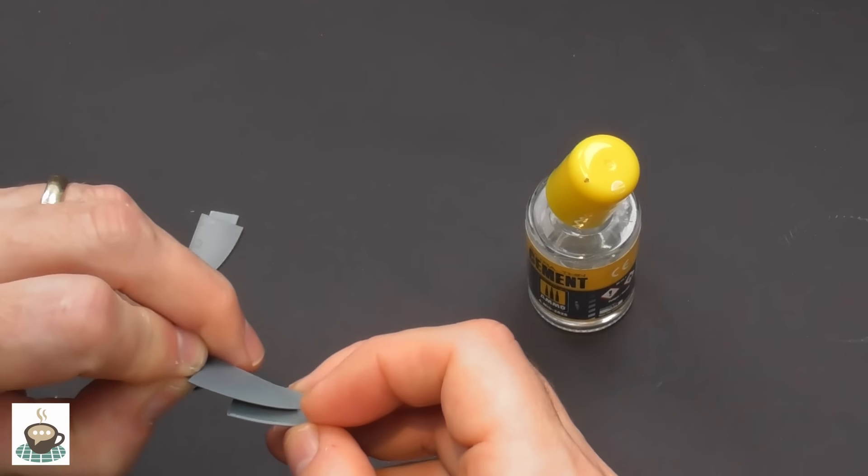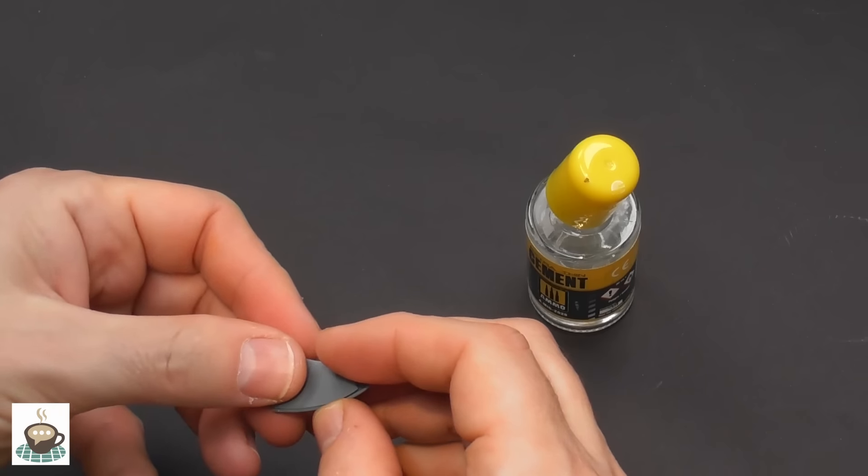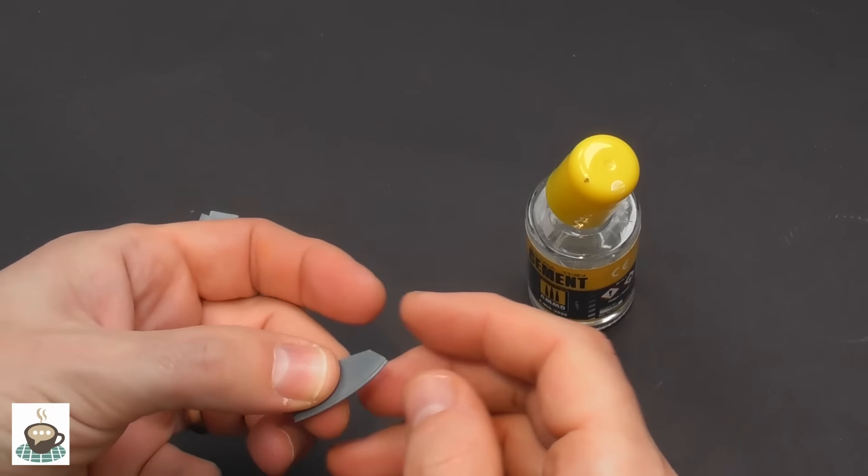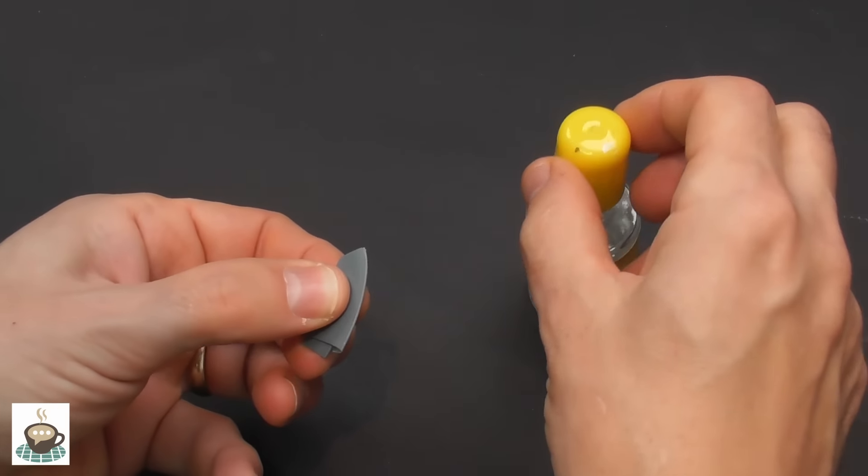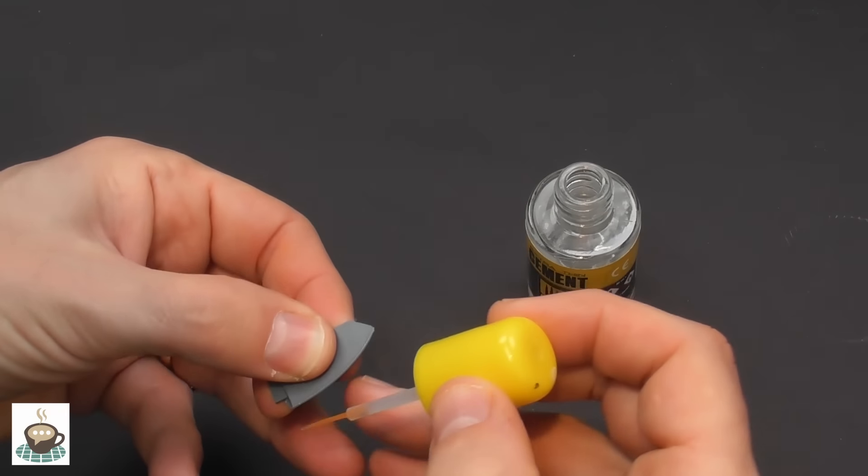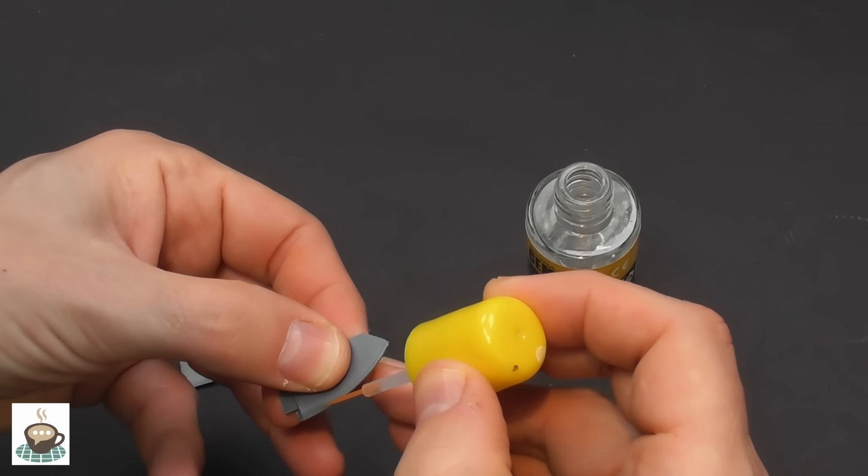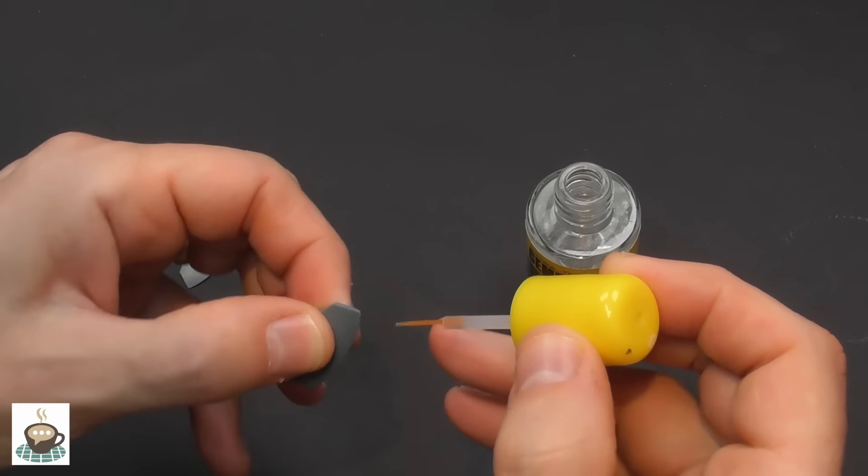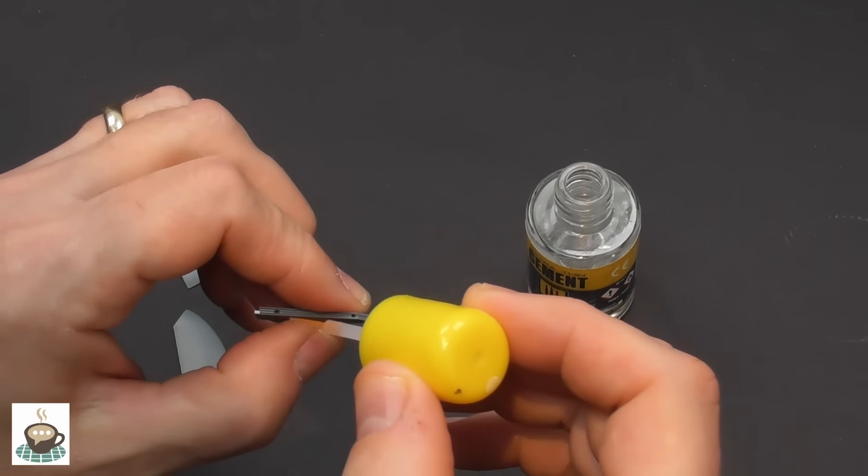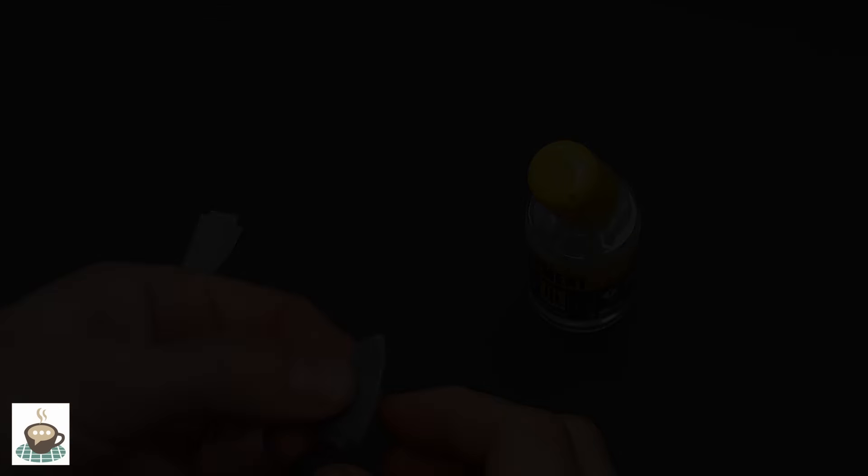Two part elevators, quite straightforward. The seam actually is not on the leading edge, it's running along a panel line just behind the leading edge. This is a really great system because that panel line was there in real life and it means you don't have to do any sanding. So I really like that engineering.